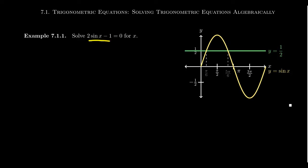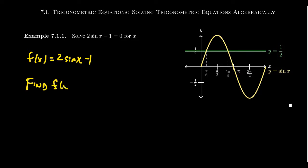Consider the equation 2 times sine of x minus 1 is equal to 0. Can we find all values of x for which this equation would be solved? One way to solve equations is graphically — you could take the function f(x) = 2 sine of x minus 1 and find all the x-intercepts. But it turns out we'll be much more efficient if we try to solve this algebraically.